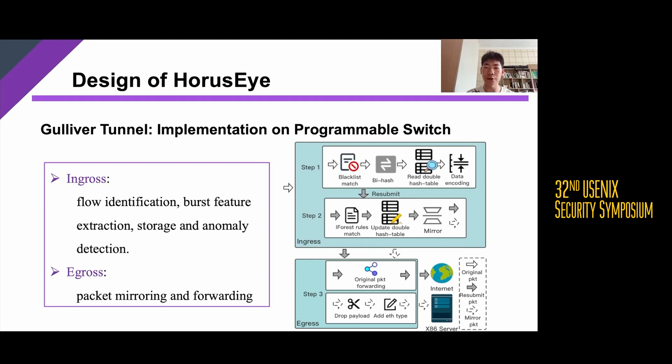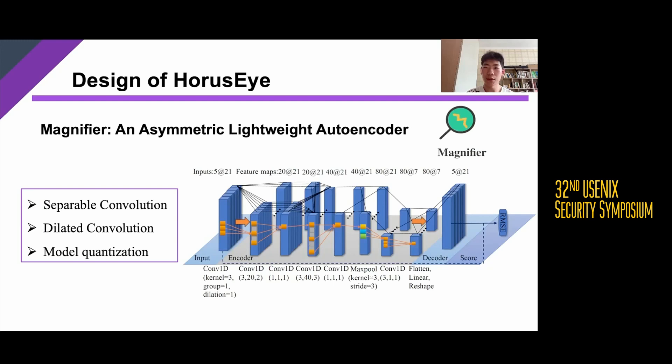We implement Gulliver Tunnel on programmable switches using the P4 programming language. The switch consists of an Ingress phase and an Egress phase. In the Ingress phase, we implement flow identification, burst feature extraction, storage, and anomaly detection using iForest whitelist rules. Due to the limitation of the Tofino chip, a register in the switch pipeline can be either read or written, so the read and update operation of the double hash table is realized by resubmitting. In the Egress phase, packet mirroring and forwarding are performed.